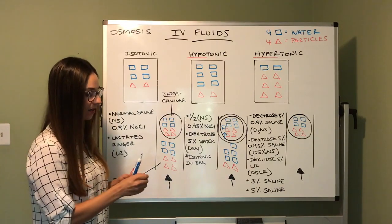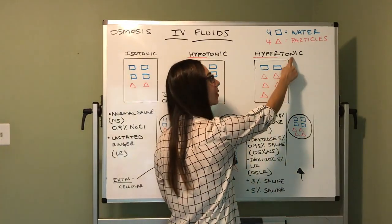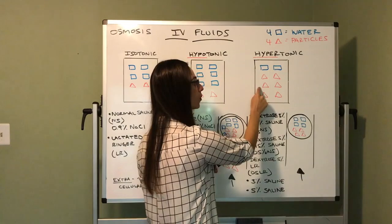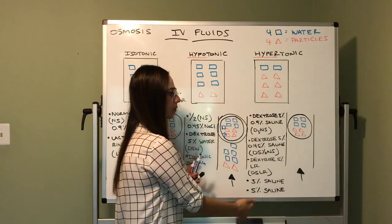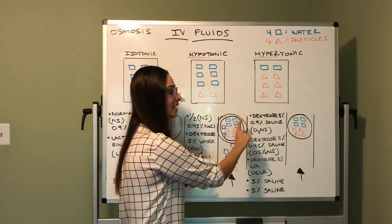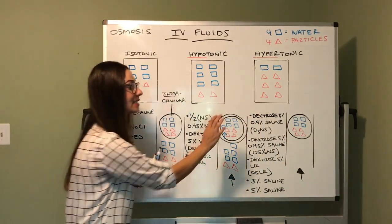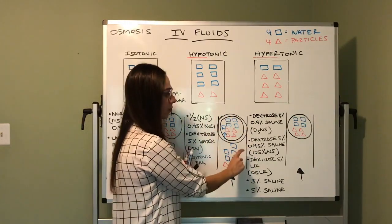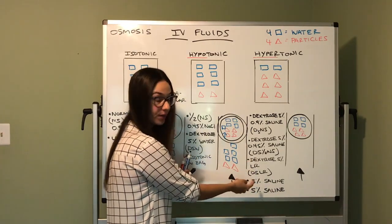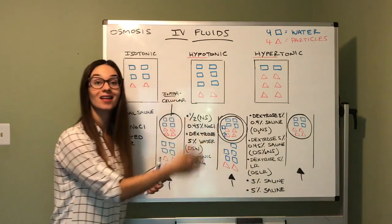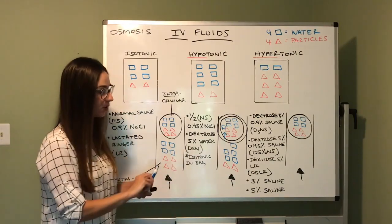Our last solution is hypertonic. If you remember, hyper means more, and tonic means particles. So with a hypertonic solution, you have more particles in your fluid bag versus water. Examples include dextrose 5% in 0.9% saline — that is D5 normal saline, not D5W — and you can also have D5 half normal saline, D5 and LR, 3% saline, and 5% saline. Again, this is not the full list. So let's transfuse this hypertonic solution into our vein.